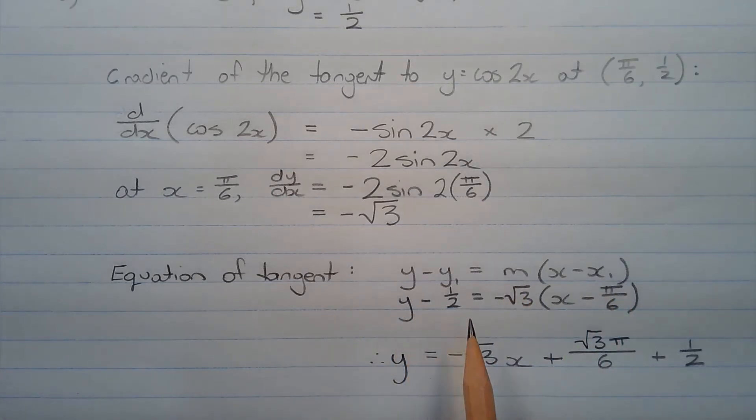So y minus half is equal to negative root 3 times x minus pi over 6. And expanding the brackets and adding half to both sides of the equation to make y the subject, we get y equals negative root 3 times x plus root 3 times pi over 6 plus half.